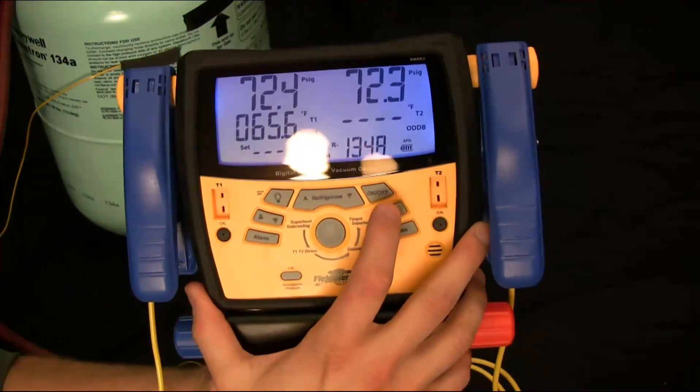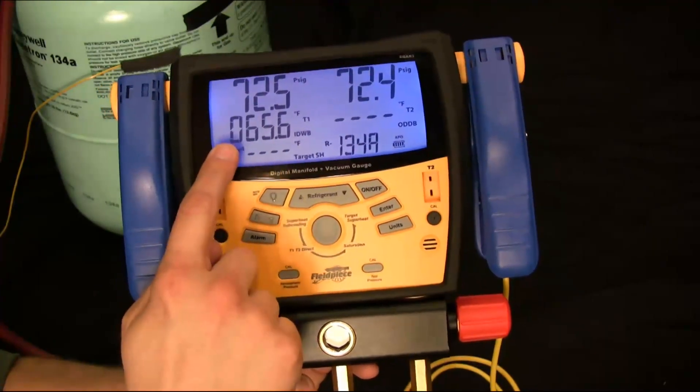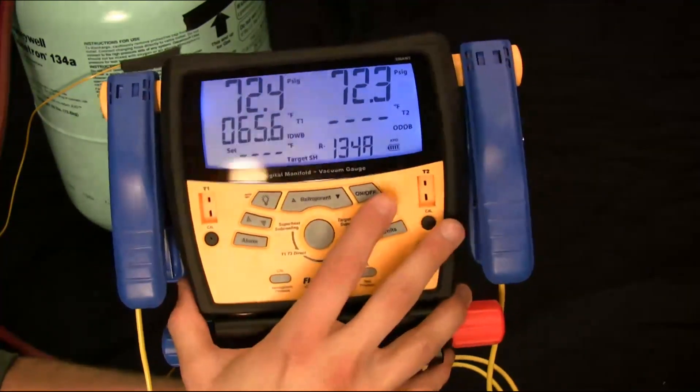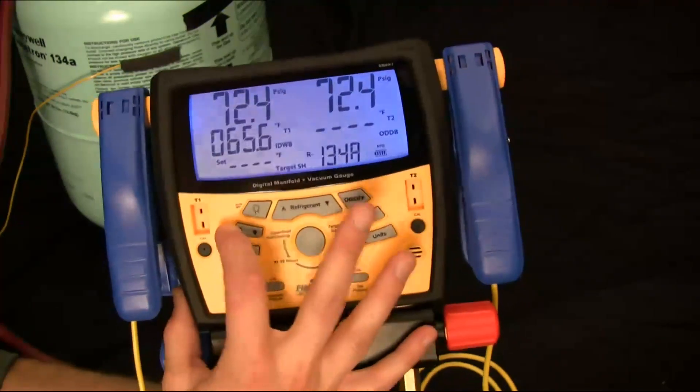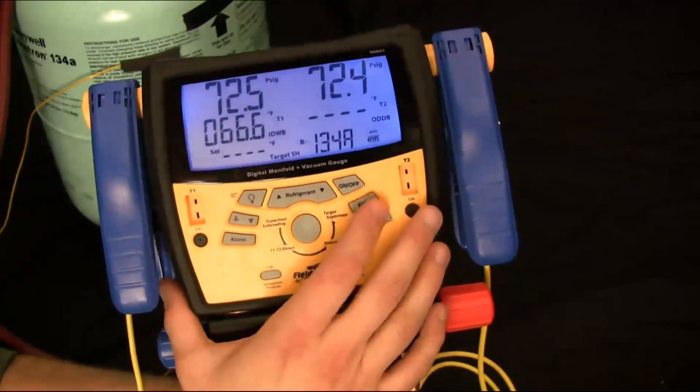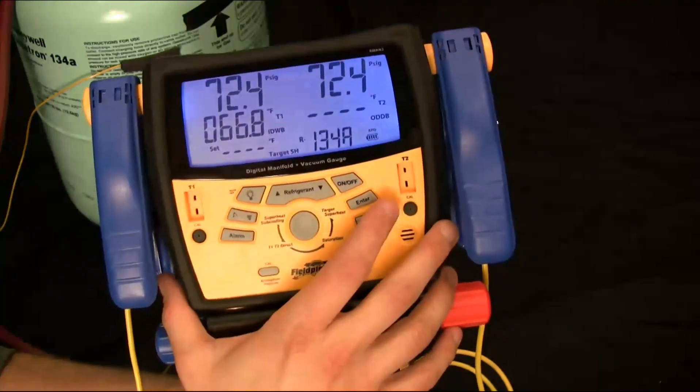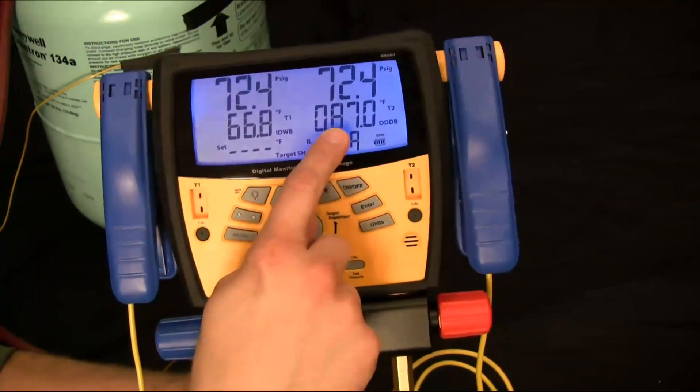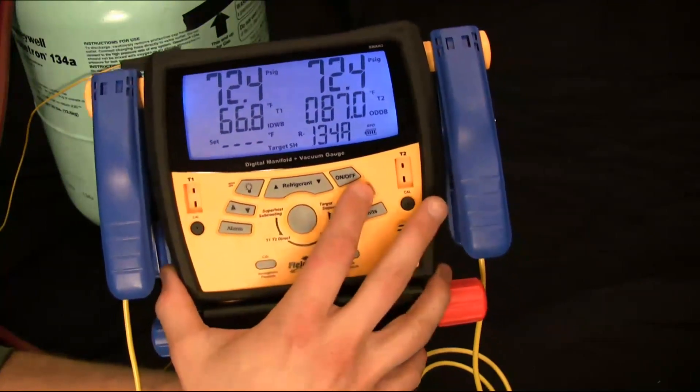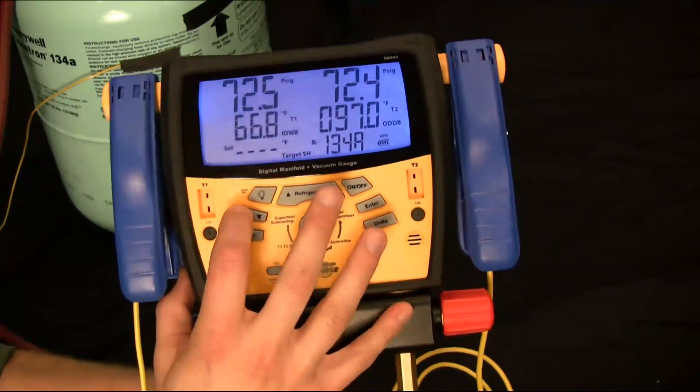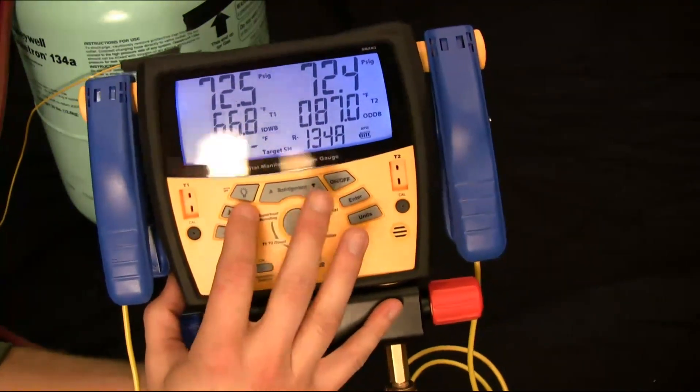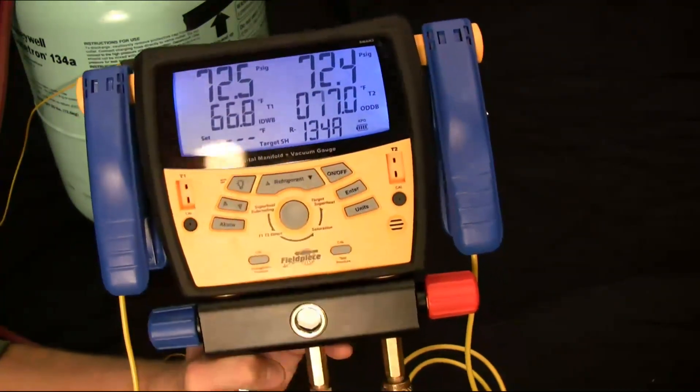So first I'm going to press enter. That's just going to move my cursor to the first digit on the indoor wet bulb. I can lower it, but let's move it to, let's say it's 66.8 degrees indoor wet bulb. And then once I entered that one in, it's going to move over to the outdoor dry bulb. And let's say it's 77. I can go up or down using the arrows. Let's say it's 77.